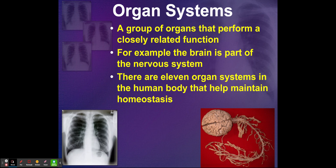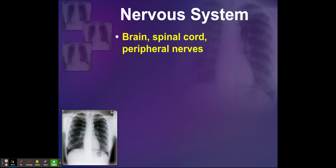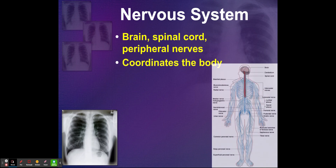We're going to talk about the 11 organ systems that help us maintain homeostasis. First, we're going to talk about the nervous system, which includes your brain, spinal cord, and your peripheral nerves. The nervous system coordinates the body.